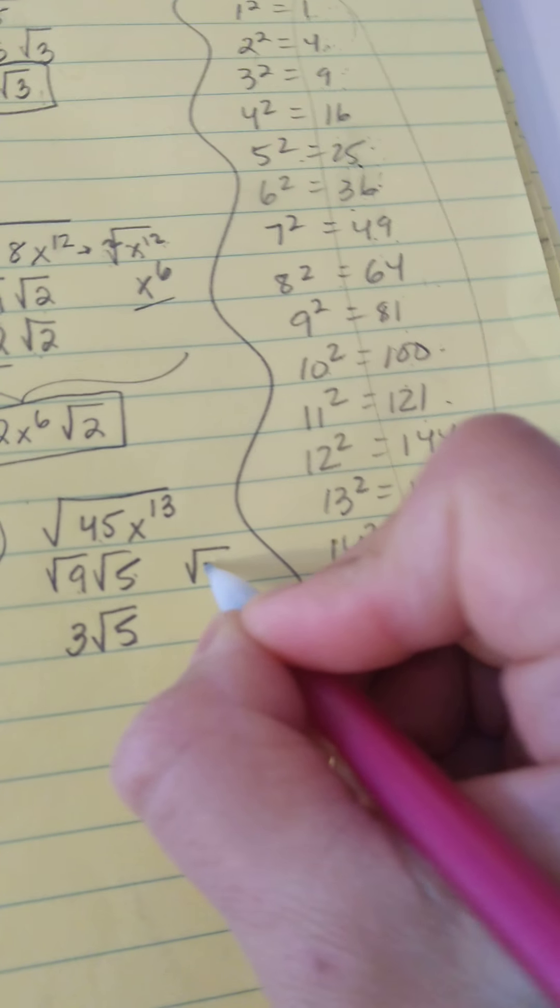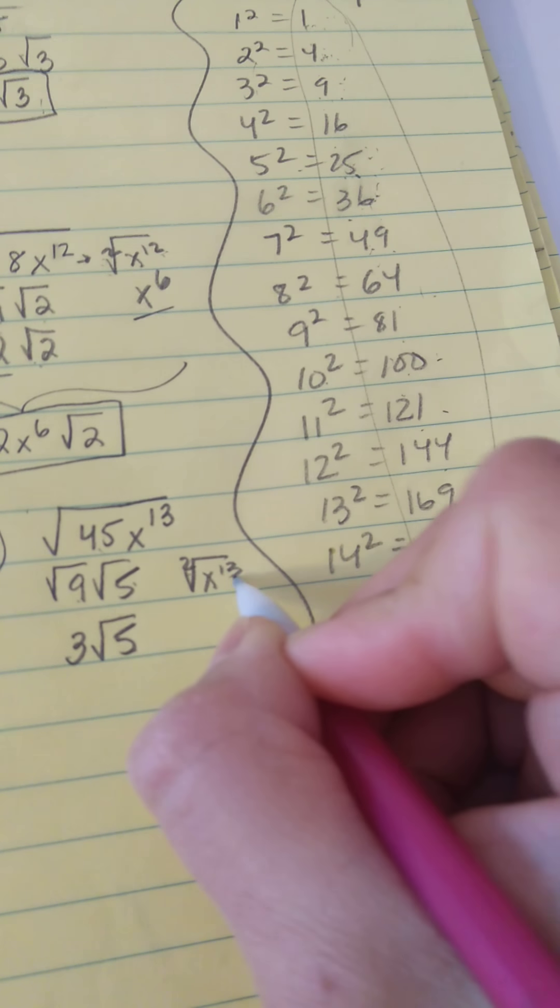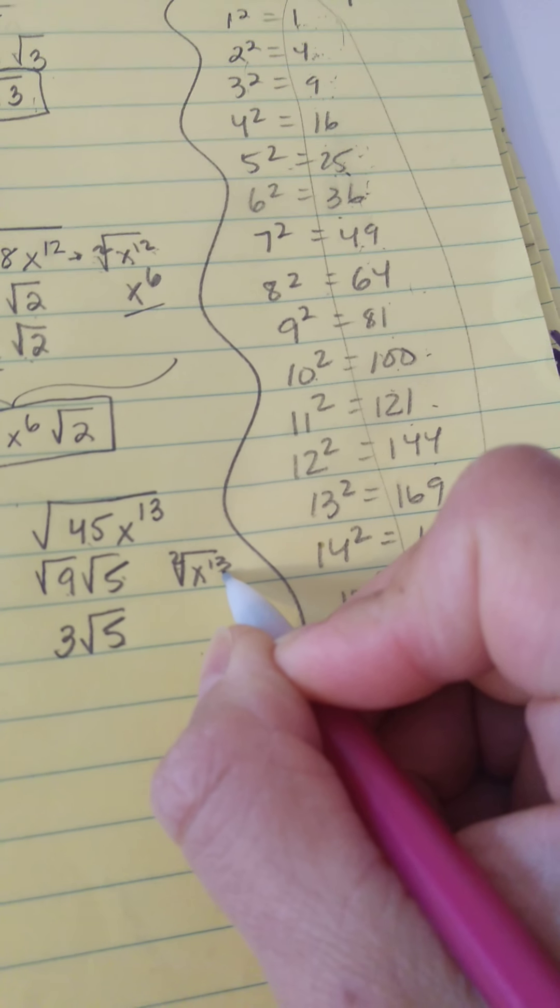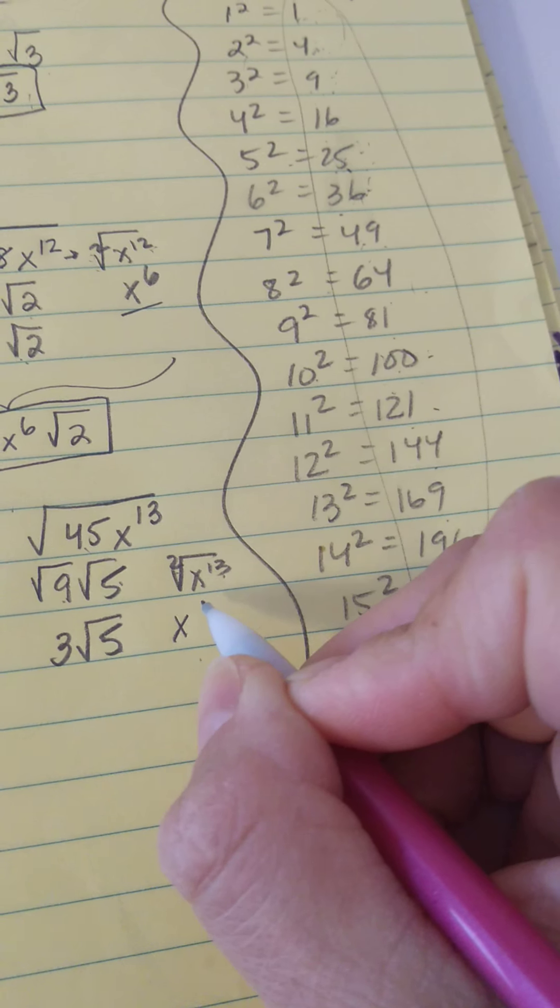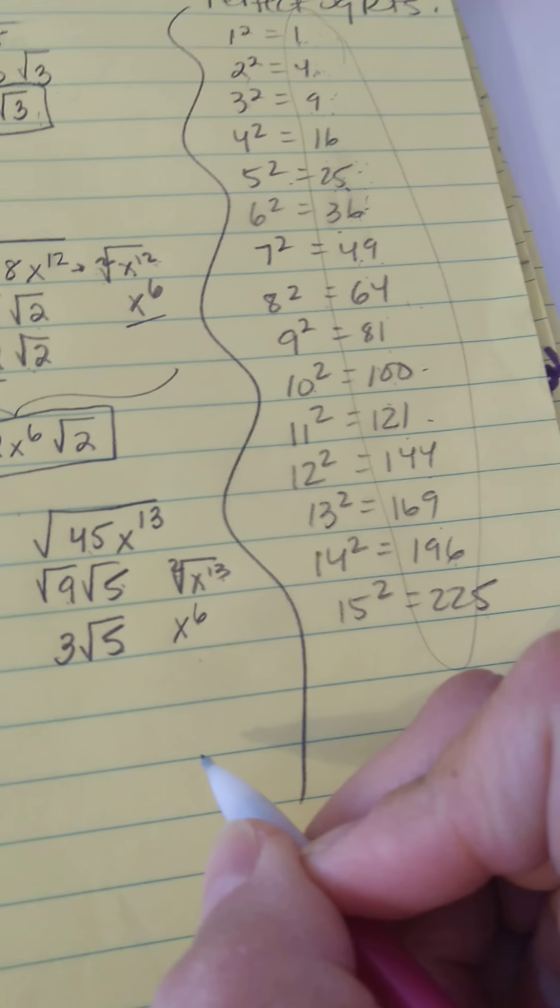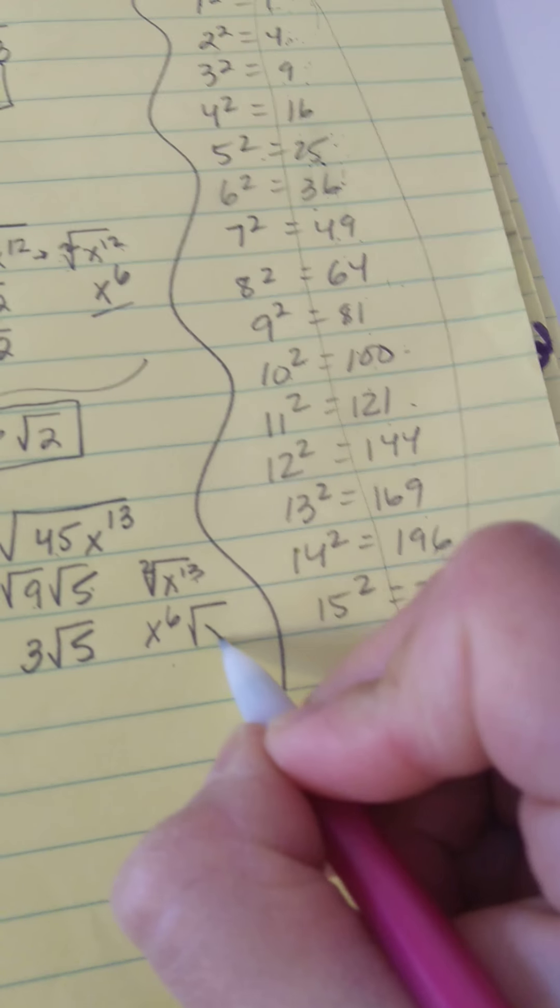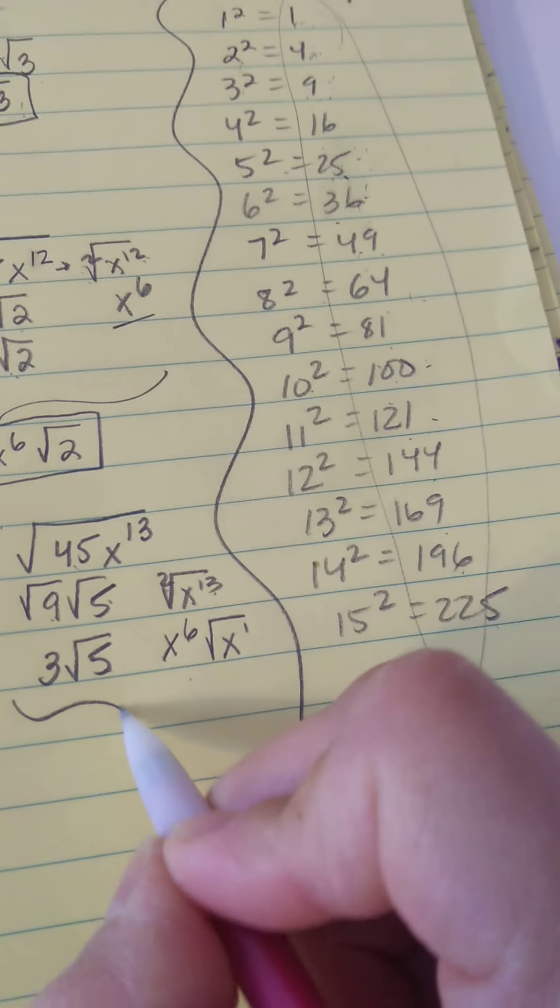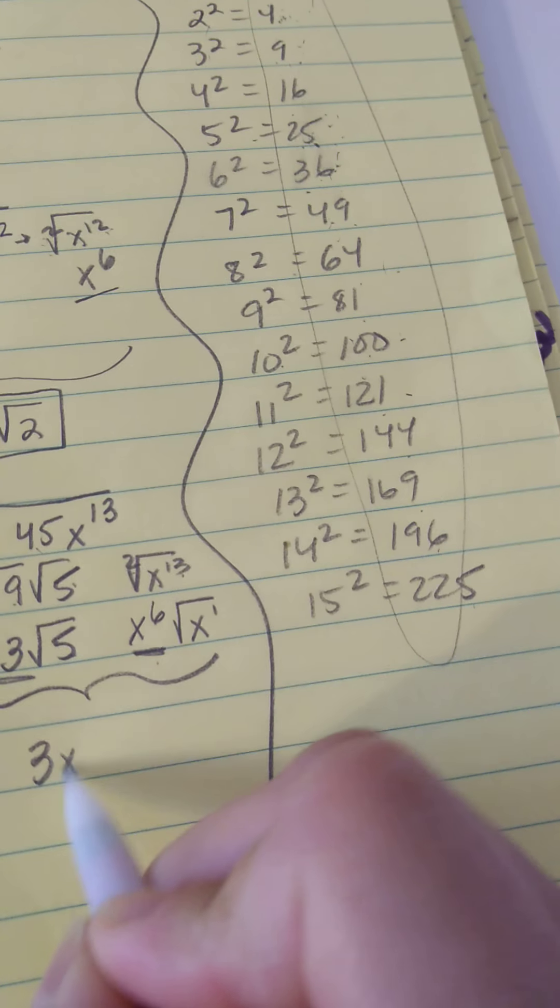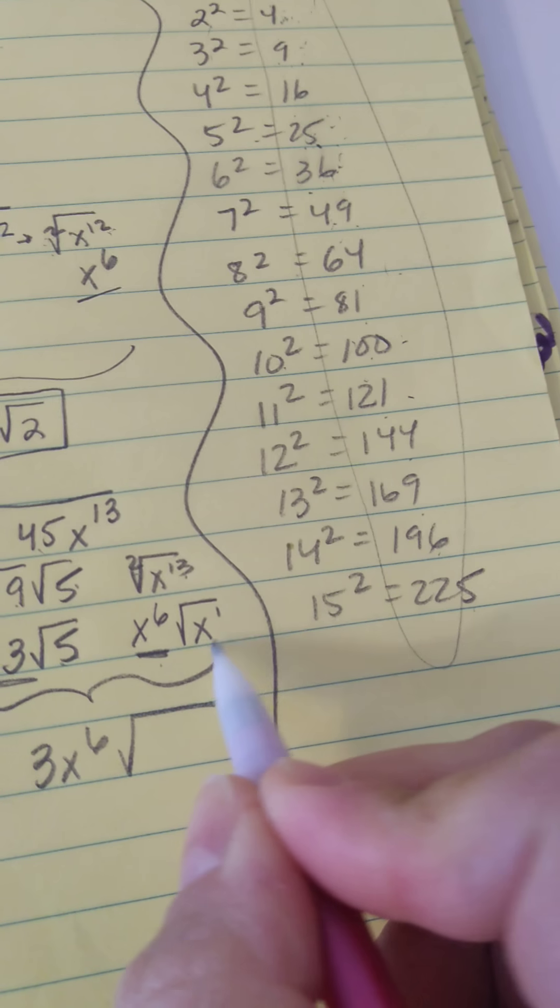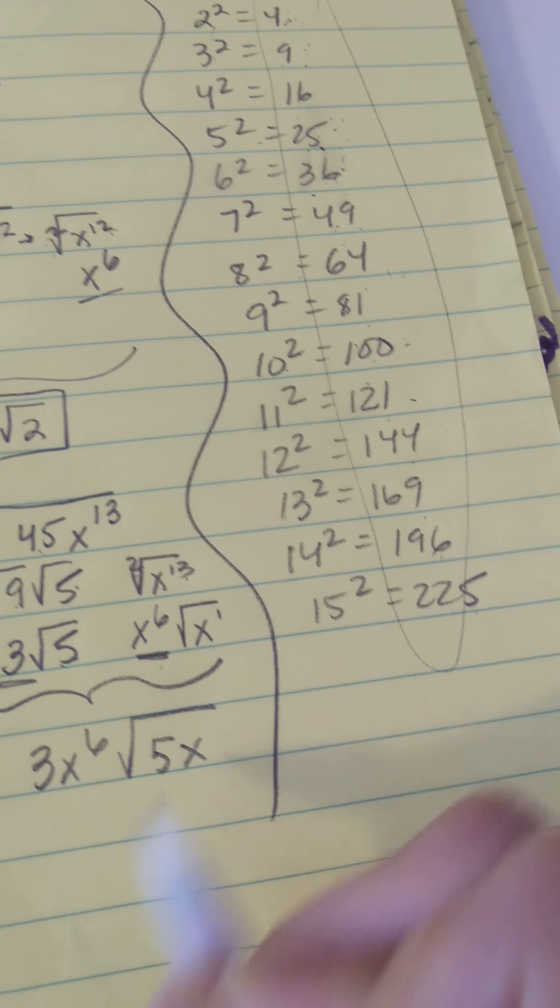And then we have x to the 13th. So 2 divides into 13 how many times evenly? 6 times, right? That brings me to 12, with a remainder of 1. So the guys under the radicals go together as well.